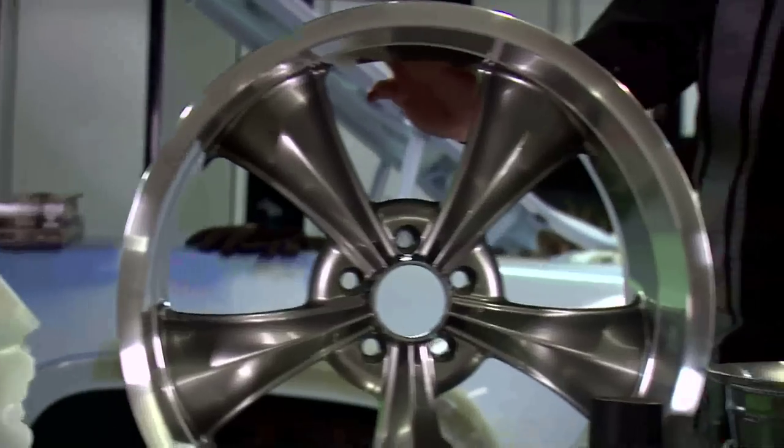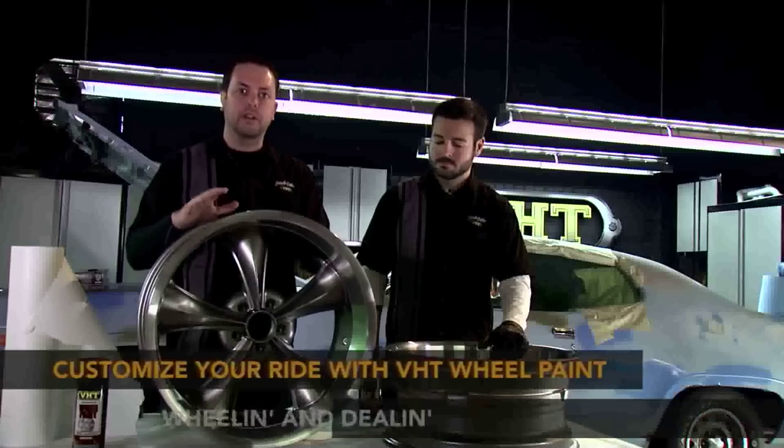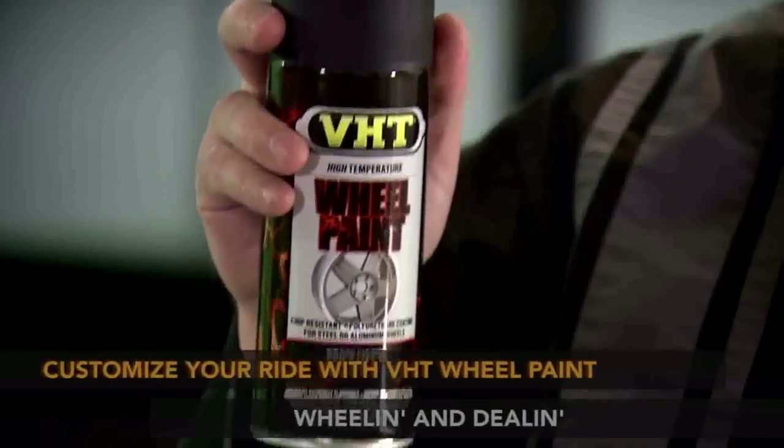We'll be using this larger one for our back wheel and the smaller for the front, but what we're going to do is customize these a little further to match our other designs in the car with our VHT satin black wheel paint.